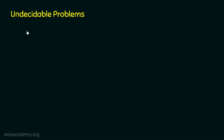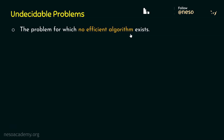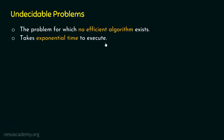An undecidable problem is a problem for which no efficient algorithm exists — only inefficient algorithms can solve these problems. An inefficient algorithm is one that takes exponential time to execute. Exponential time is a function that grows exponentially with the size of the input, where a constant base has a variable power — for example, 2ⁿ, 3ⁿ, etc.